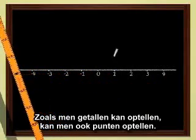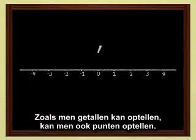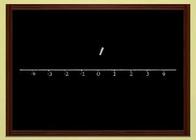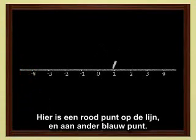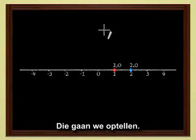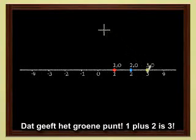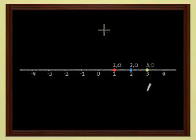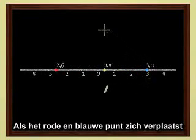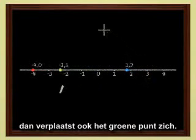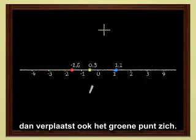Just as we can add numbers, we can add points. Here is a red point on the line, and another blue one. Let's add these two points. We get the green point. One plus two equals three. When the red and blue points move, the green point, which is the sum, must move too.